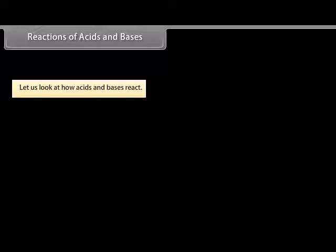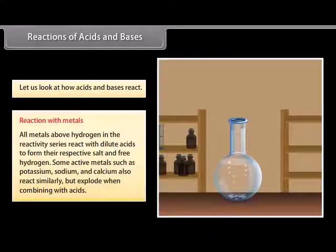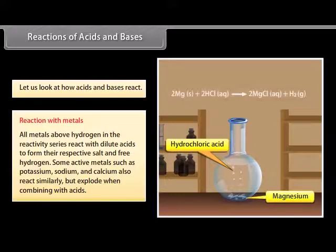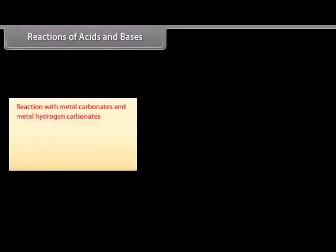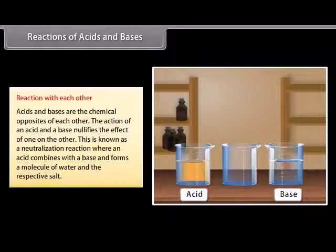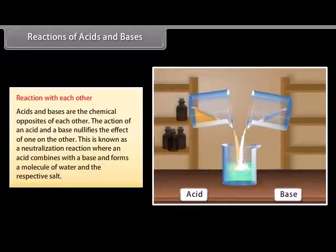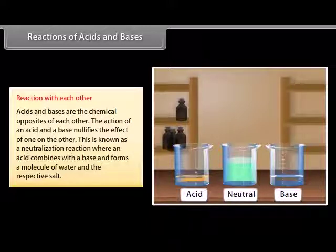Let us look at the different reactions of acids and bases with metals, metal carbonates, metal hydrogen carbonates, and with each other. All metals above hydrogen in the reactivity series react with dilute acids to form their respective salt and free hydrogen. Active metals such as potassium, sodium and calcium also react similarly but explode when combining with acids. Acids react with carbonates and hydrogen carbonates to form their respective salt, water and carbon dioxide. Acids and bases are the chemical opposites of each other — the action of an acid and a base nullifies the effect of one on the other, which is known as a neutralization reaction. In this reaction, an acid combines with a base and forms a molecule of water and the respective salt.